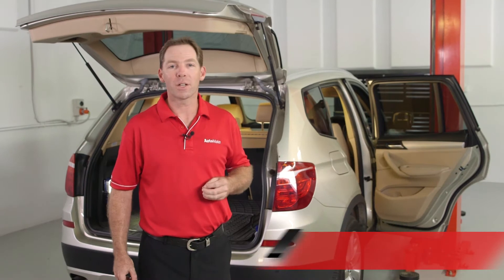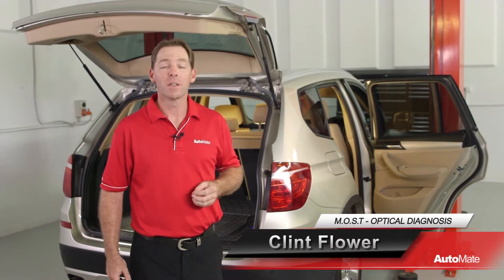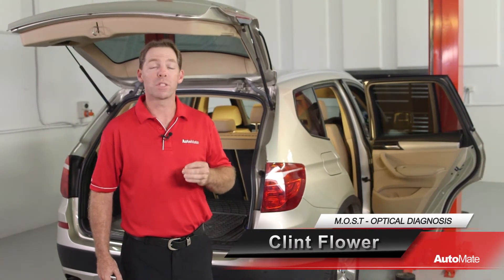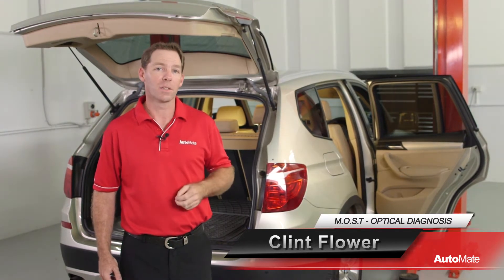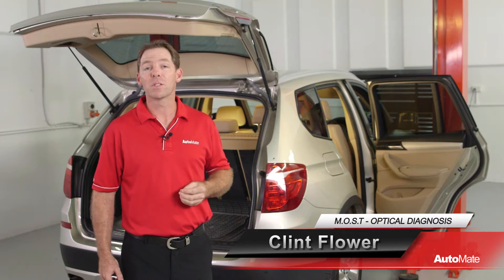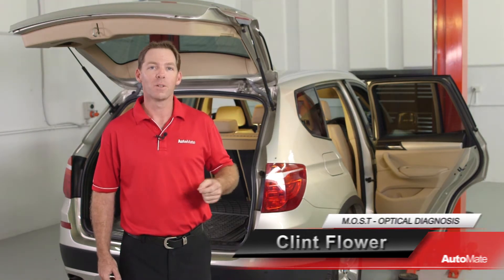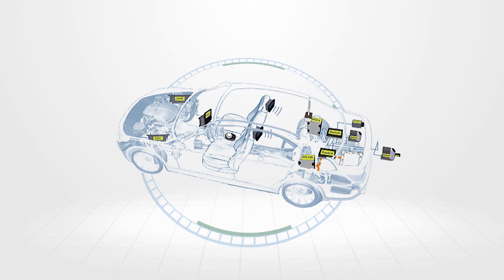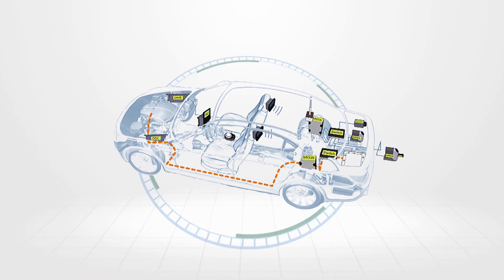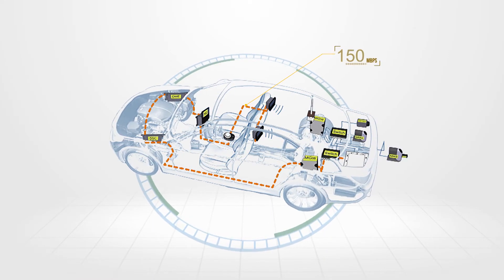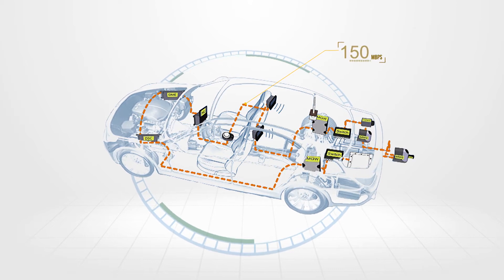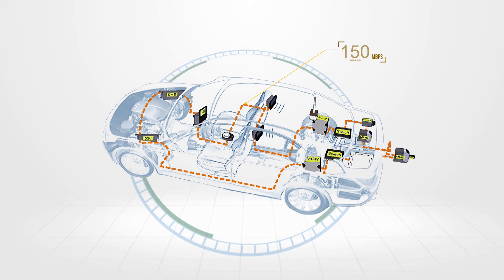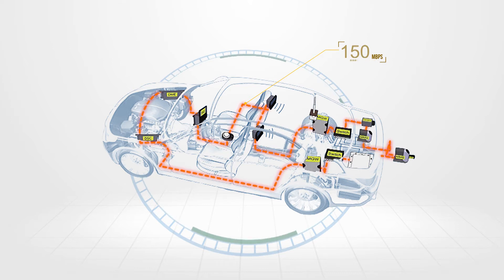The most important feature of any multimedia network is that it must be able to transport digital video, audio, and graphics between modules instantly. An optical type bus is perfect for this function. Hi, I'm Clint, welcome to Automate. Optical buses can transmit and receive data at speeds of up to 150 megabits per second — a speed nearly as important as the bandwidth, or quantity of data transmitted.